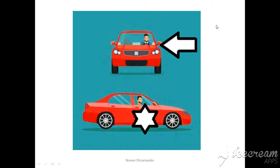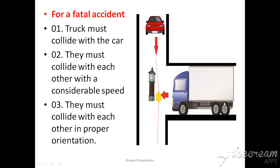Third, even though there is a collision at sufficient speed, it will be fatal to the driver only if the truck collides in the right area — specifically the front door, which is closest to the person driving the car. If you fulfill these three conditions, the driver will end up with fatal injuries.